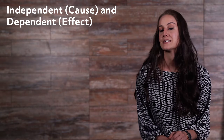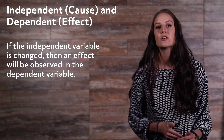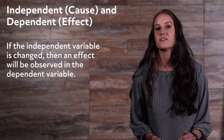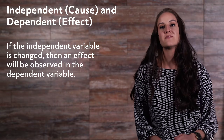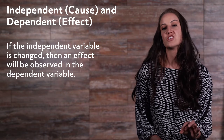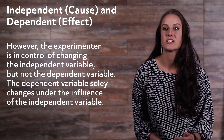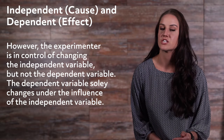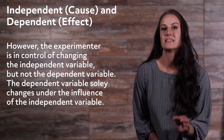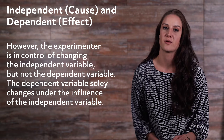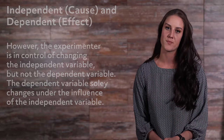It may be helpful to think of the independent variable and the dependent variable in the same vein as cause and effect. If the independent variable is changed, then an effect will be observed in the dependent variable. Both independent and dependent variables may change during the duration of the experiment. However, the experimenter is in control of changing the independent variable, but not the dependent variable. The dependent variable solely changes under the influence of the independent variable.